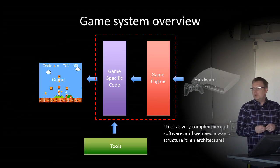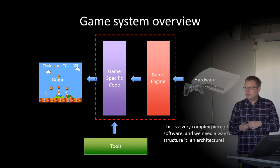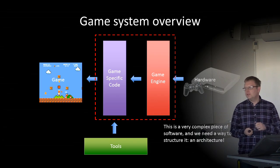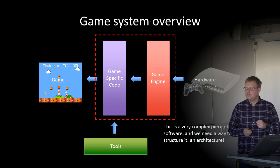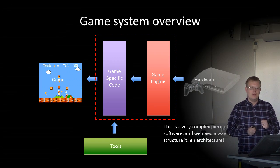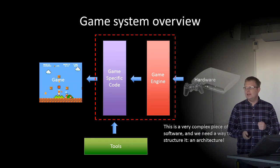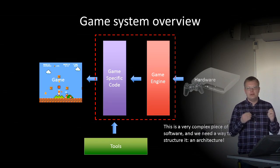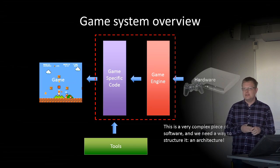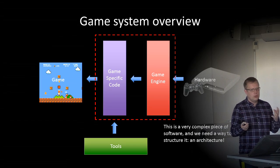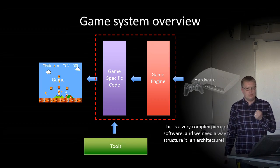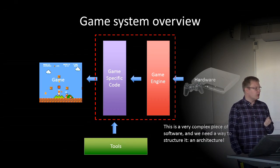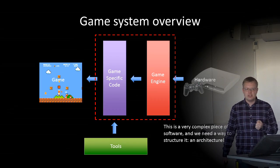The actual game — the game engine and the game-specific code — is a very complex piece of software. We need a way to structure it, to structure the different classes we use in the system. This is what we call an architecture.